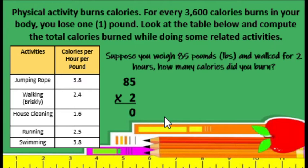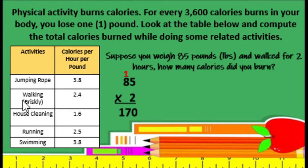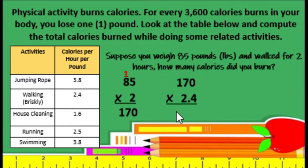So 2 times 5 is equals to 10, carry 1. Then 2 times 8 is equals to 16, plus 1 is equals to 17. And then the next step, we are going to multiply 170 by 2.4, because that is the activity value for walking. So that is 170 times 2.4. We write the numbers vertically in column form.